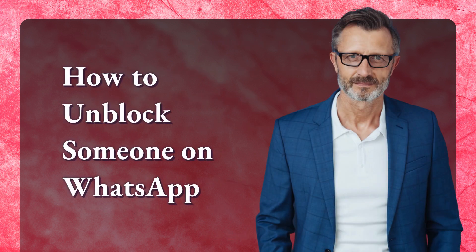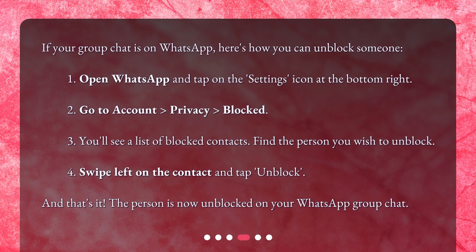How to unblock someone on WhatsApp? If your group chat is on WhatsApp, here's how you can unblock someone. 1. Open WhatsApp and tap on the Settings icon at the bottom right. 2. Go to Account > Privacy > Blocked. 3. You'll see a list of blocked contacts — find the person you wish to unblock. 4. Swipe left on the contact and tap 'Unblock.' And that's it — the person is now unblocked on your WhatsApp group chat.